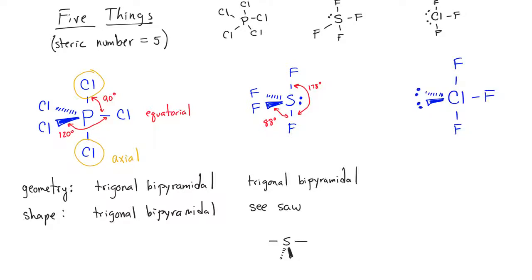In the case of ClF3, we have three bonded atoms and two electron pairs. The electron pairs go in the equatorial positions for maximum stability. The bond angles between the axial and equatorial fluorines are a little less than 90 degrees — about 87 to 88 degrees. The shape of ClF3 is called T-shaped, because the molecule forms a T with fluorines to the sides and one on the bottom. The geometry is trigonal bipyramidal.